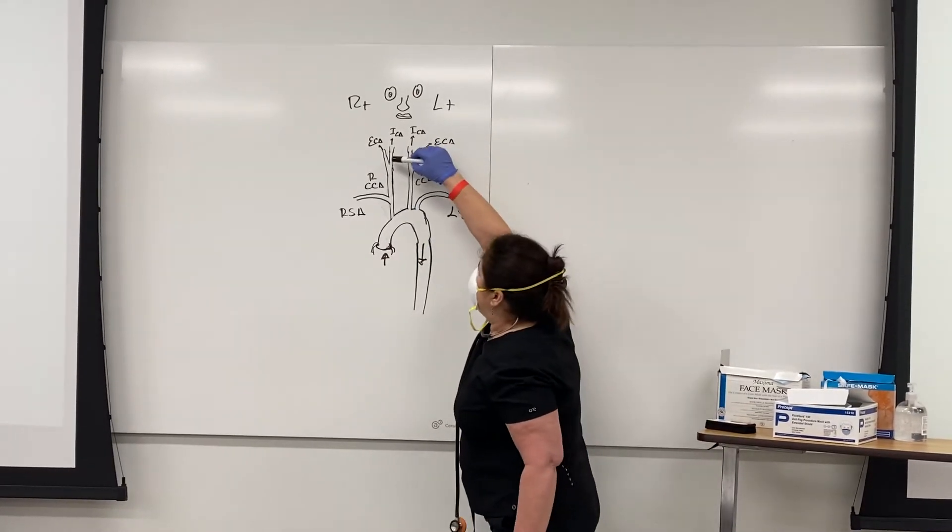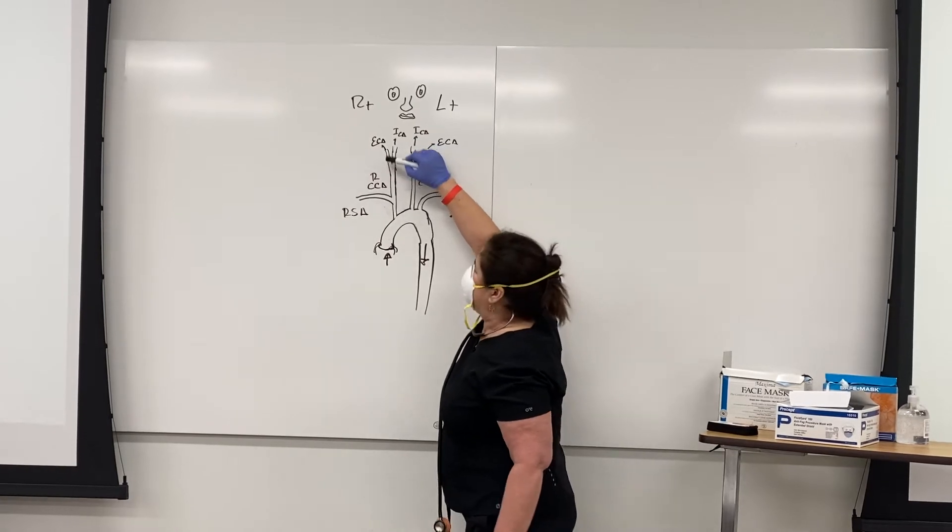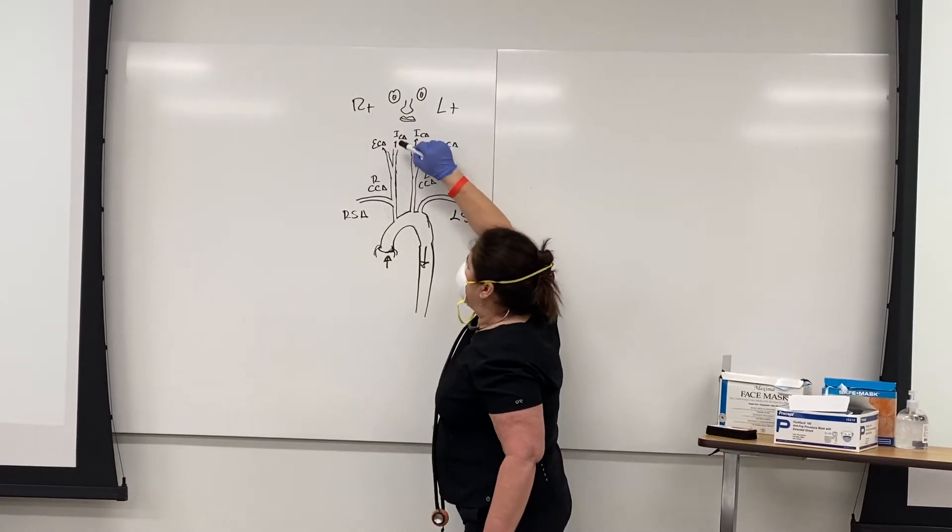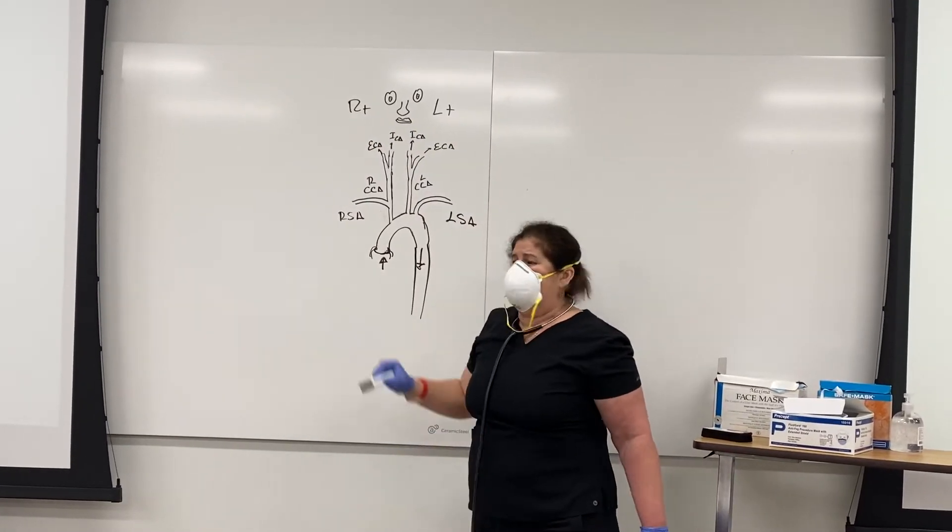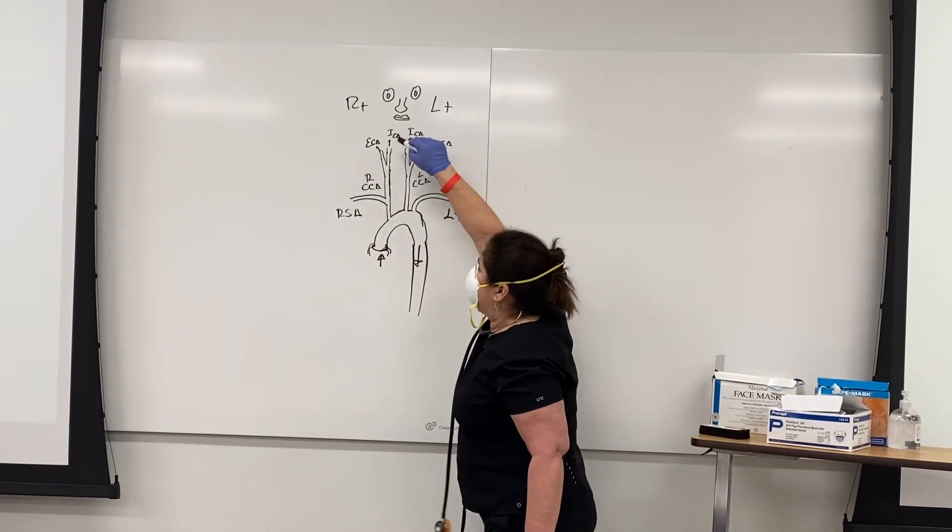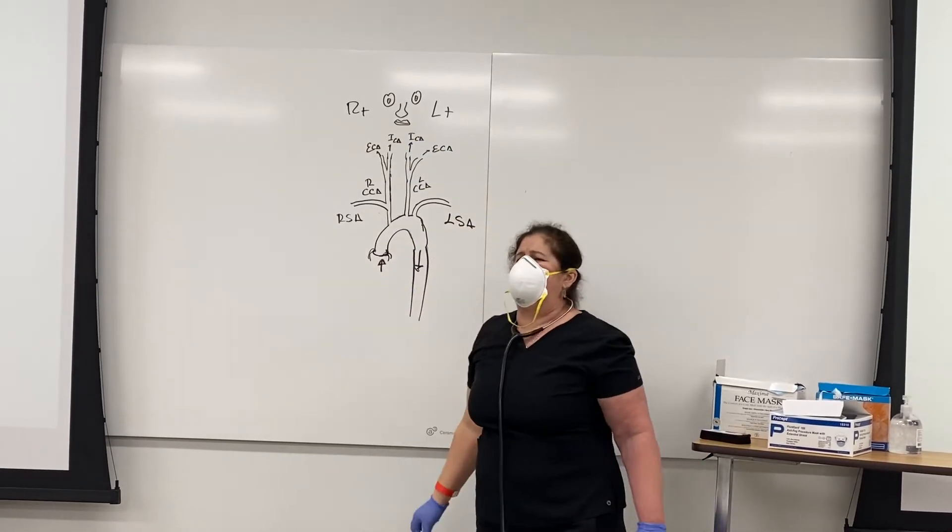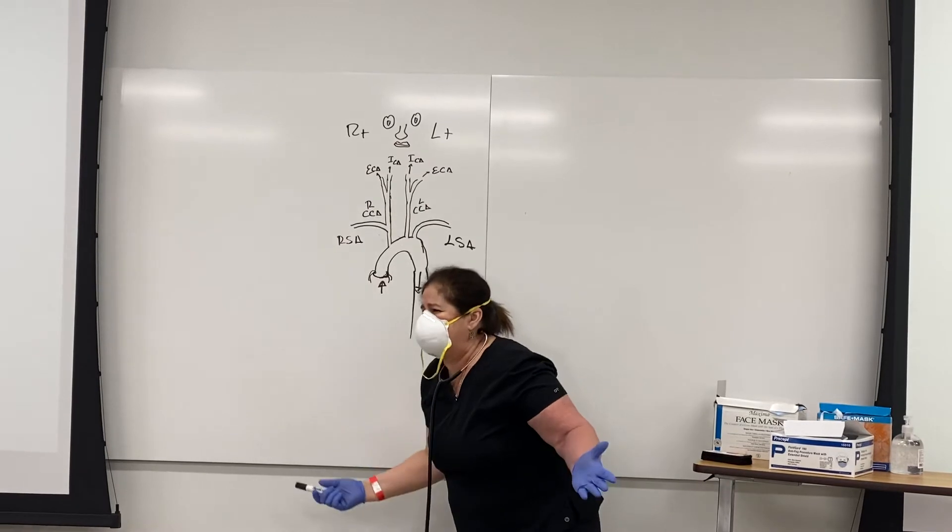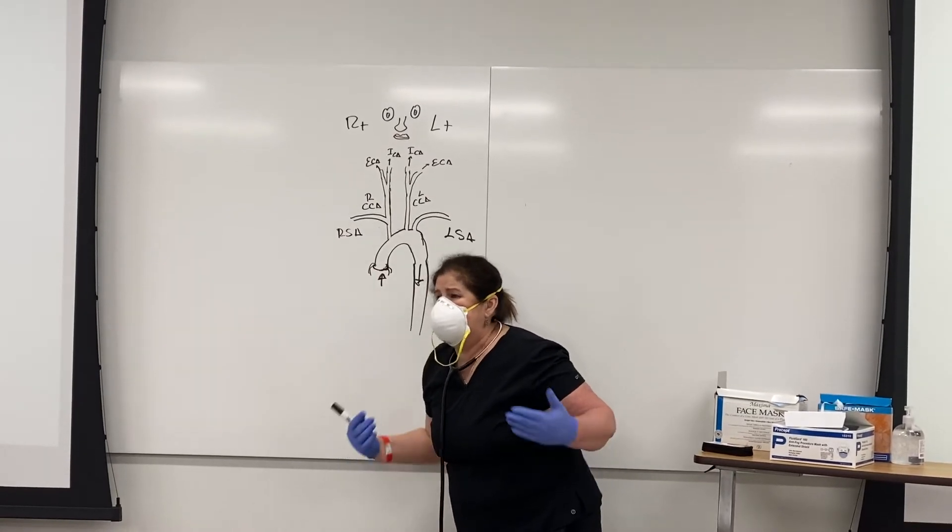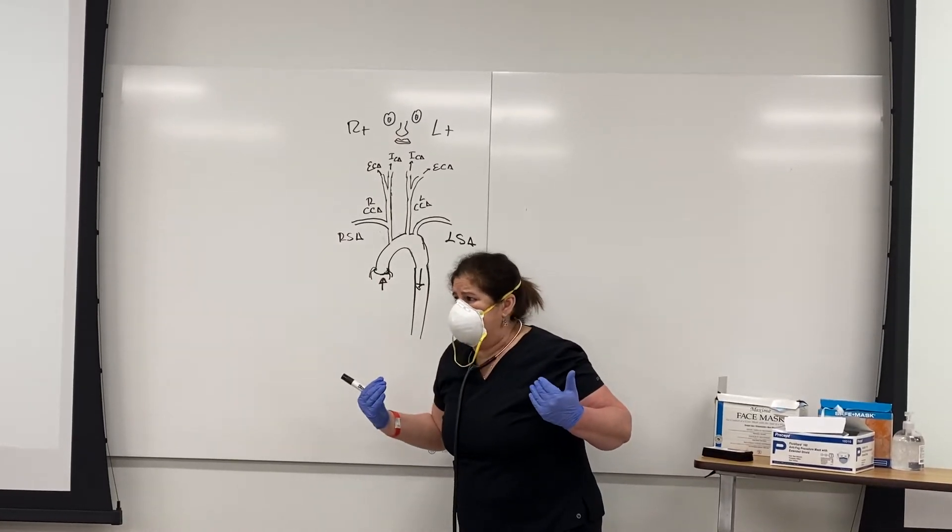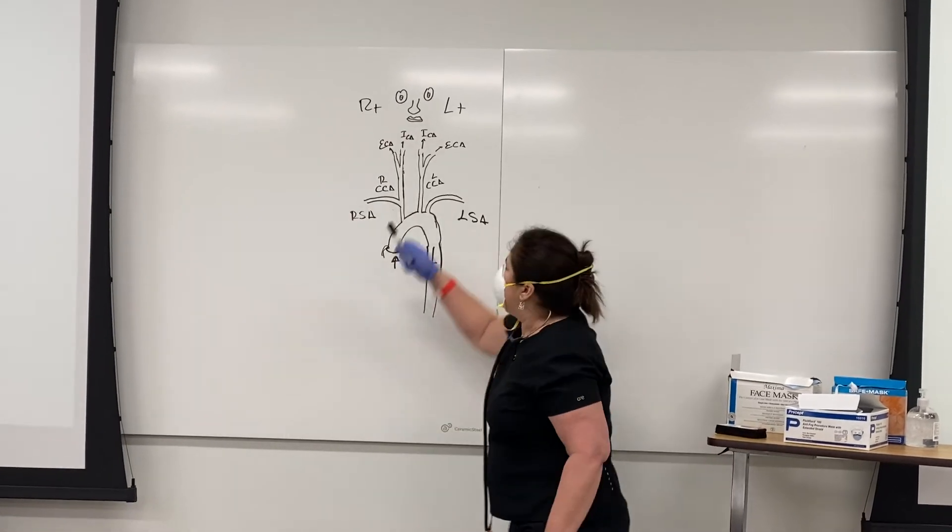From the common carotid artery, we're going to have external and internal carotid artery. And we studied already that the internal carotid artery forms part of what type of circulation of the brain? Anterior circulation of the brain, part of the Circle of Willis, remember?